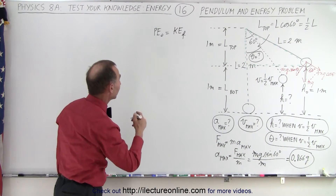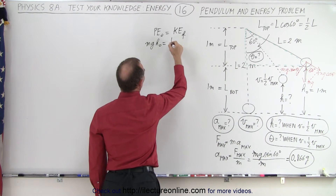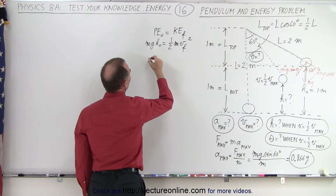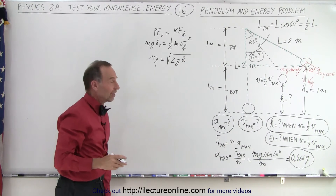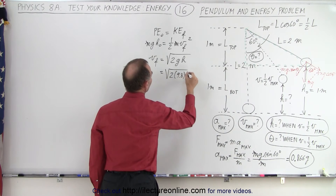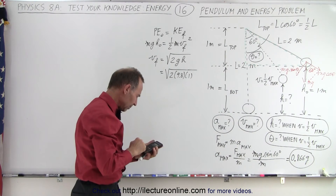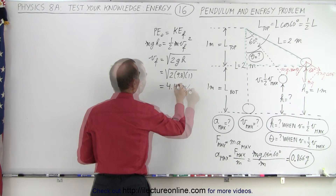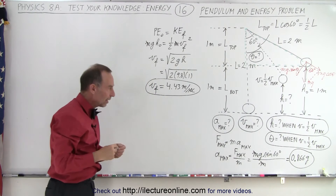Now we calculate: potential energy initial, mgh initial, equals kinetic energy final, one half mv final squared. The masses cancel, giving v final equals the square root of 2gh. With h equal to 1 meter, this is the square root of 2 times 9.8 times 1, which is the square root of 19.6, giving us 4.43 meters per second. This is the final velocity when the pendulum reaches the very bottom of its swing.